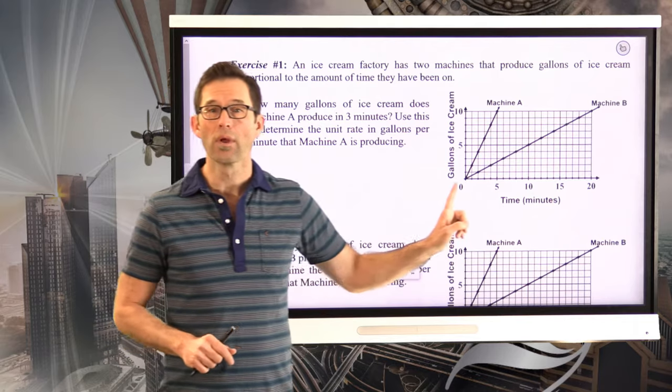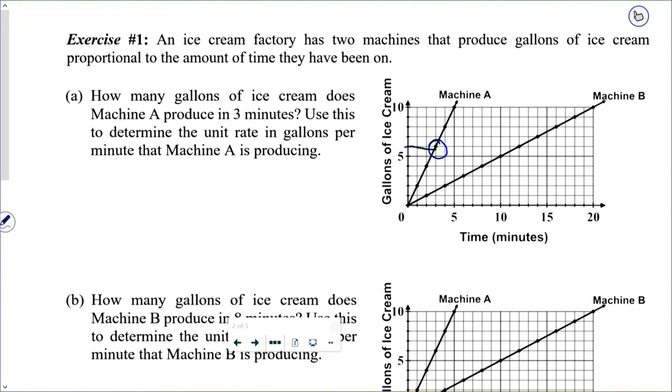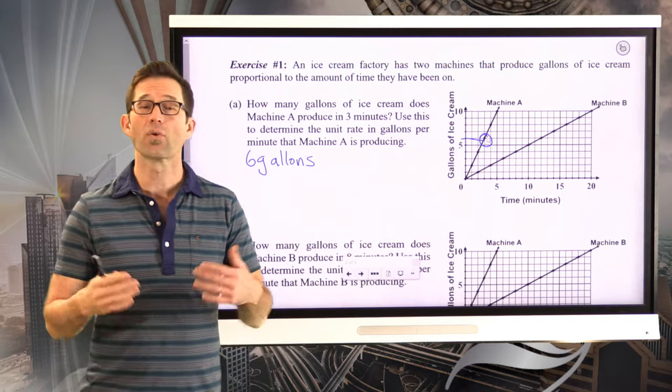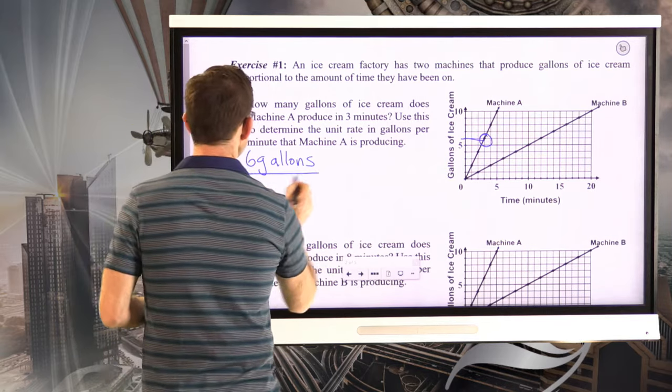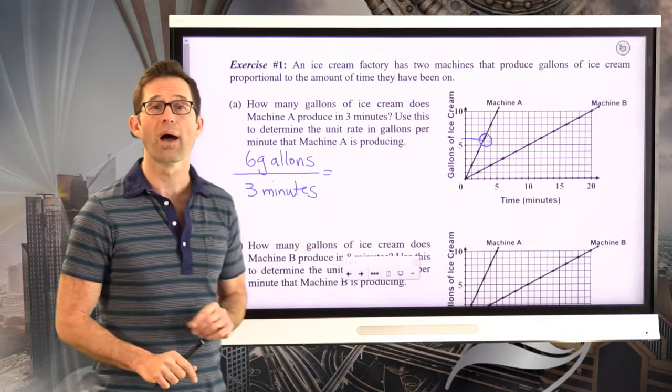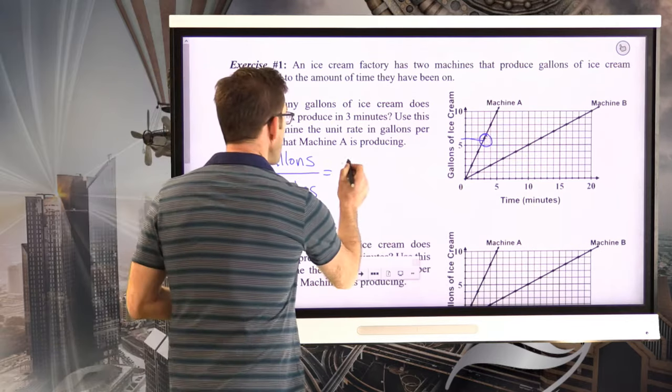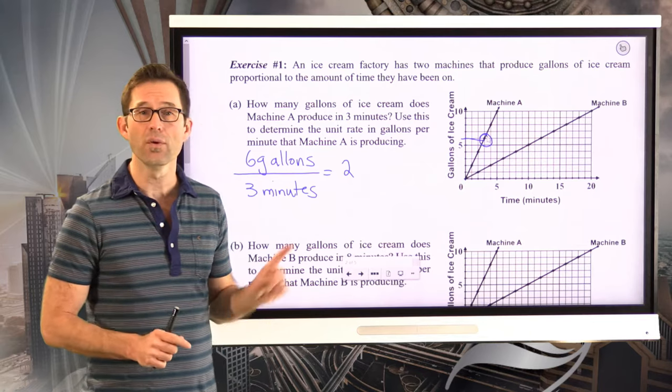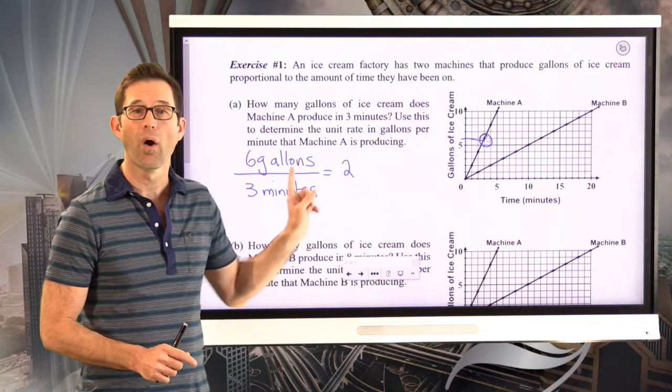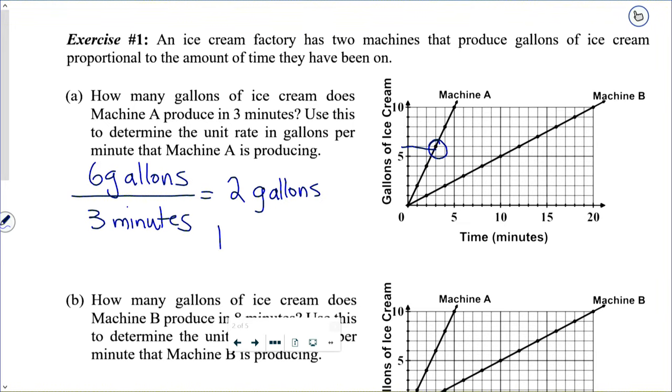All right, so here we go. We go out to three minutes on the x-axis, we go up, and we see that machine A has produced six gallons. So the first answer of this is just six gallons. Now, we want to use that fact to create a unit rate. Well, what we know is that it's produced six gallons in three minutes, so we set up that ratio. And now, to convert any ratio into a unit rate, all we have to do is divide the numerator by the denominator, or really simplify the fraction. So six-thirds is simply equal to two.